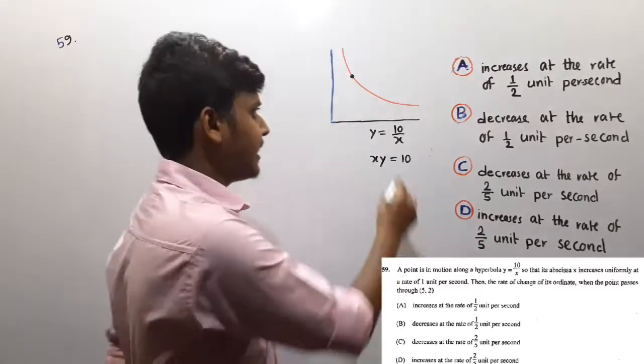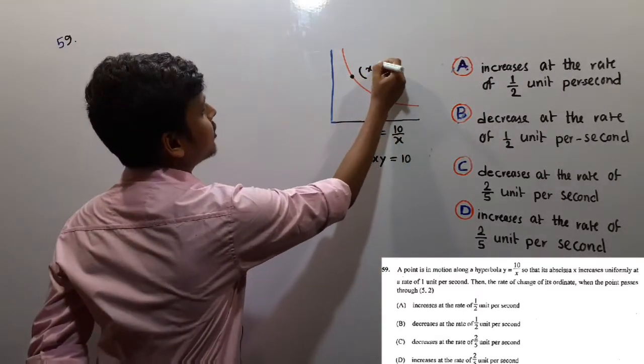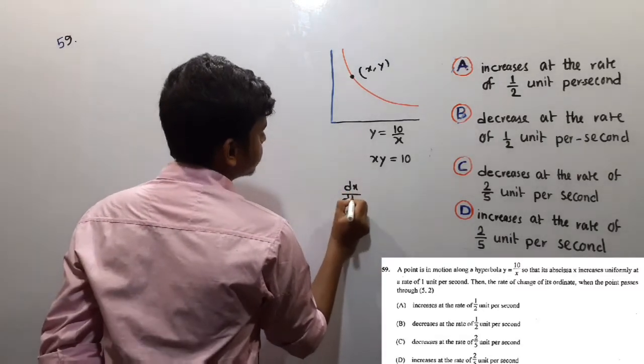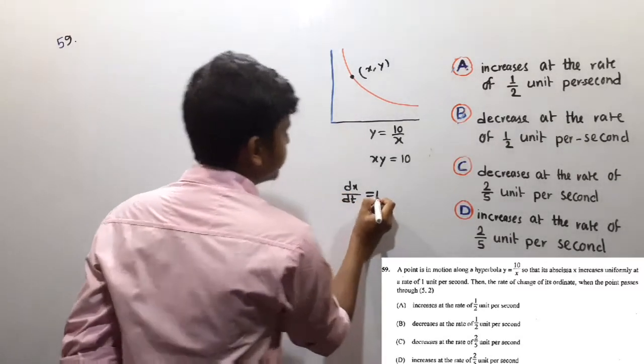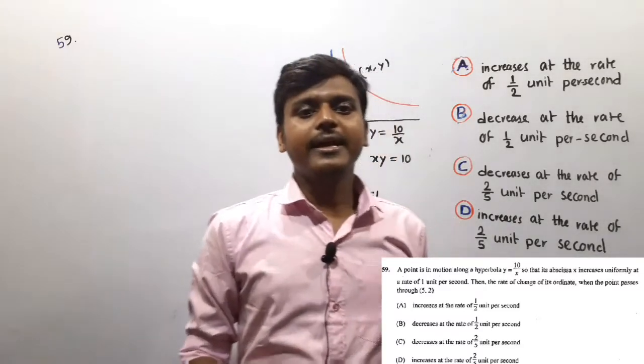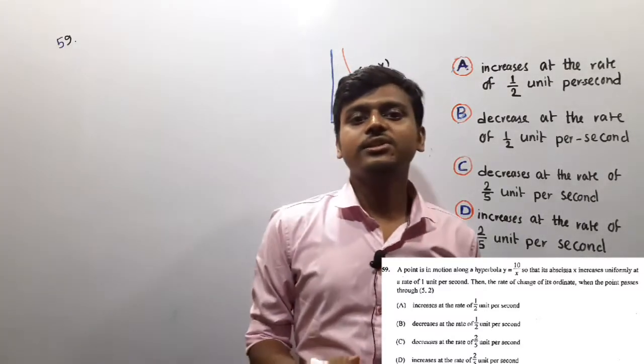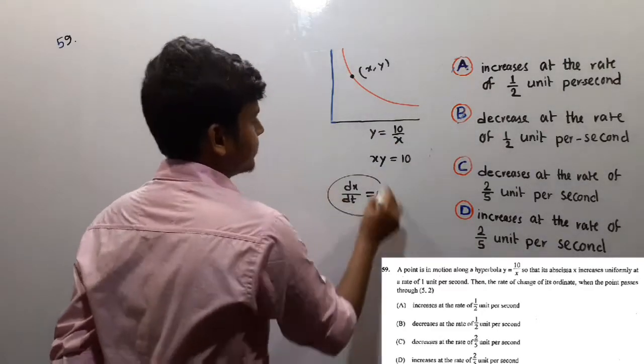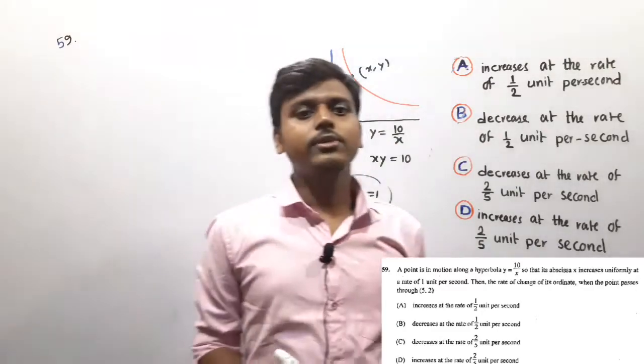x is the coordinate. dx/dt - the coordinate x increases uniformly at the rate of 1 unit per second.